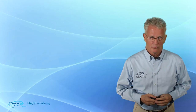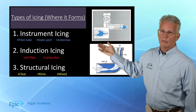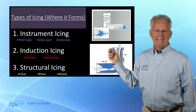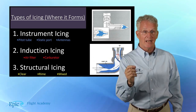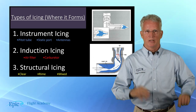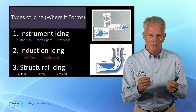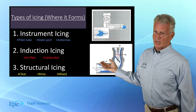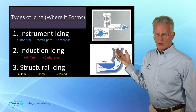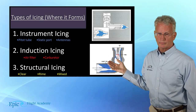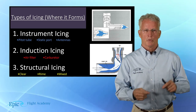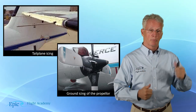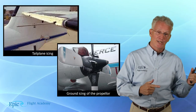When we talk about where ice forms, instrument icing concerns ice forming in, on, and around the pitot tube, the static port, and antennas on the aircraft. When we talk about induction icing, we're talking about ice forming in the induction system — for example, carburetor ice forming. And structural icing refers to clear, rime, and mixed ice forming on the structure itself: the wing, the propeller, the engine inlets, the empennage, etc.